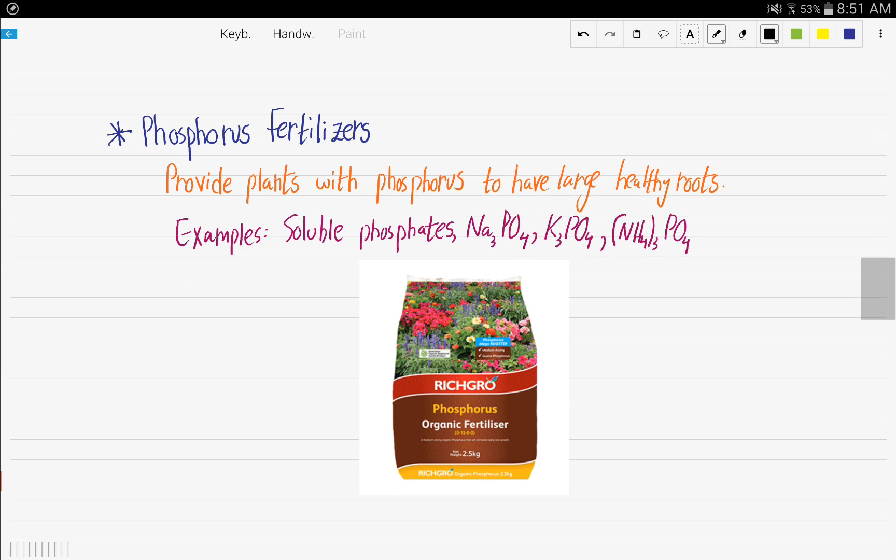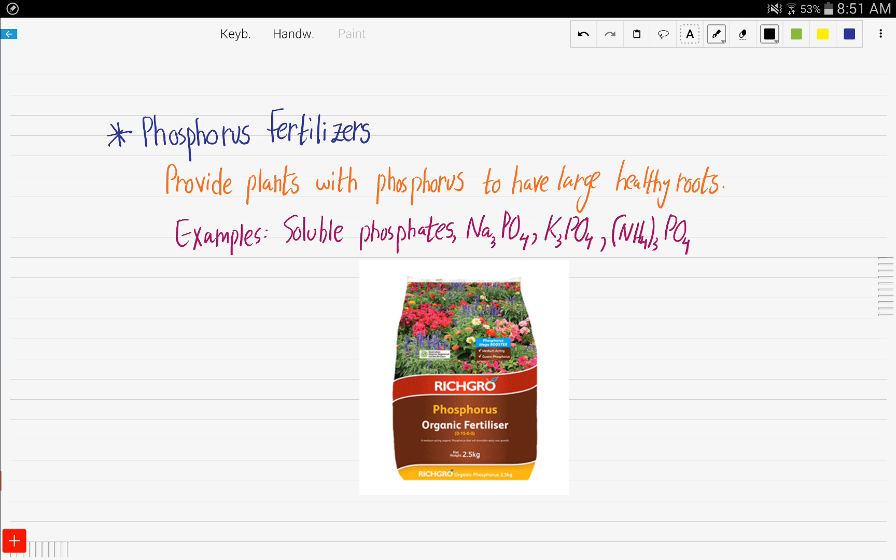Next is the phosphorus fertilizers. These provide the plants with phosphorus to have large, healthy roots. And so we said the nitrogen fertilizers provide the plants with nitrogen to have proteins in crops, to increase the proteins in crops. The importance of the phosphorus fertilizers is that they provide plants with phosphorus to have large, healthy roots.